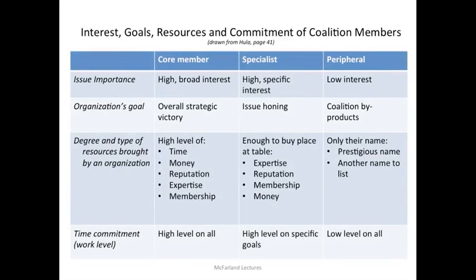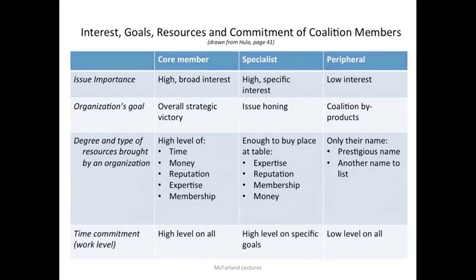Let's look at the types of members and how Kevin Hula describes their level of interest, goals, resources, and commitments to the coalition. First, core members view the issue as very important and are interested in a broad range of issues concerning it. Their goal is an overall strategic victory on this issue, and they bring a high level of time, money, reputation, expertise, and membership to the coalition — committing more than any other member. By contrast, the players and specialists care about their specific goals and attempt to hone issues toward that. They usually bring enough resources to get a seat at the negotiating table, often bringing expertise on a specific issue as their political capital, piggybacking the effort as long as specific issues are at stake.